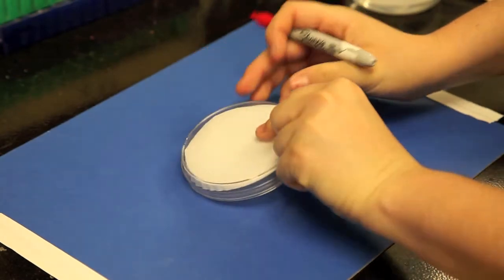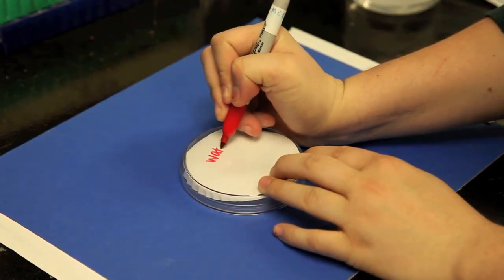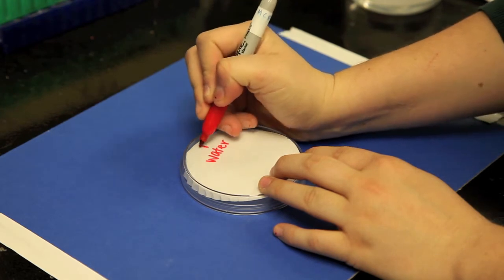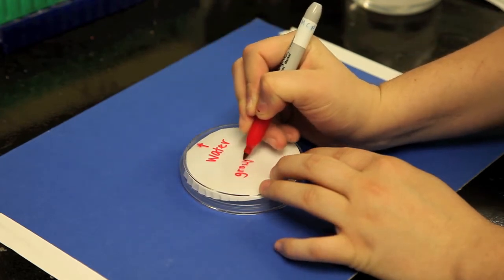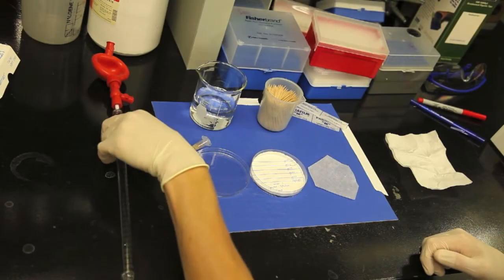Next, turn the plate around and put any additional labeling information that will help you recognize the plate, including treatment, group number, and genotype. Once you finish your labeling, you're ready to start your experiment.